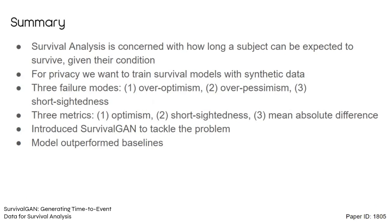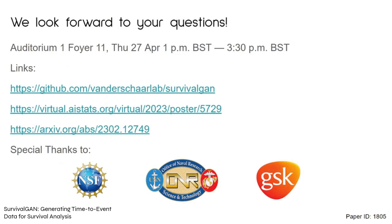In summary, survival analysis is concerned with how long a subject can be expected to survive given their current condition. To respect privacy, we want to train survival models with synthetic data. There are three main failure modes — over-optimism, over-pessimism, and short-sightedness — for which we introduced three new metrics: optimism, short-sightedness, and KM divergence. We introduced SurvivalGAN to tackle this synthetic generation problem, and it outperformed the baselines. Links to the GitHub, poster, and archive are available, and special thanks to our funders.